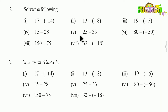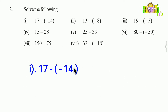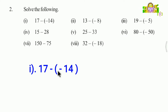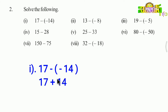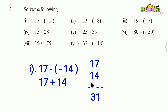The second question is to solve the problems. We will look at the number lines. The first problem is 17 minus minus 14. Minus times minus is plus, so we get 17 plus 14. 7 plus 4 is 11, carry 1, and 1 plus 1 plus 1 is 3. The answer is 31.